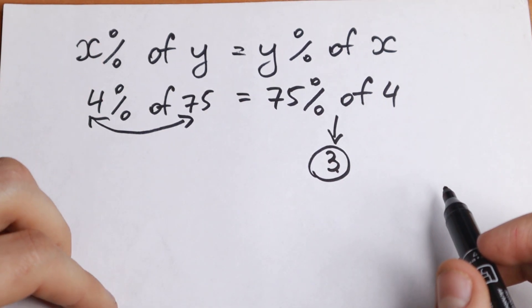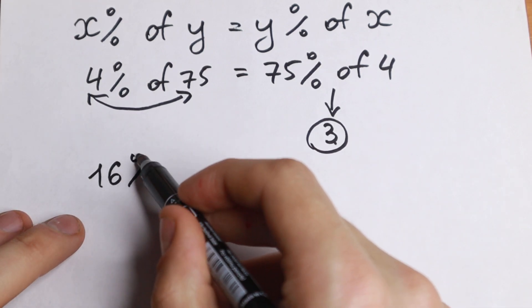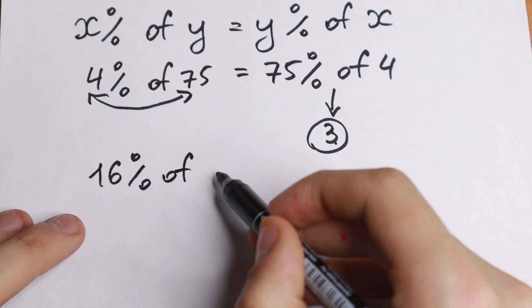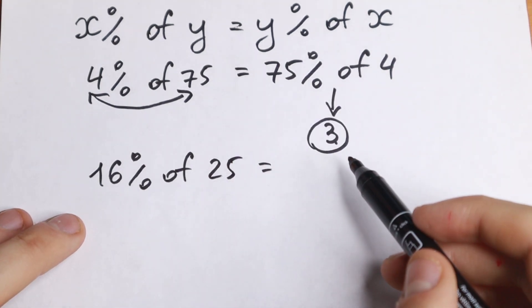So let's use this rule once more. For example, you need to find 16 percent of 25. Let's use this rule. Let's swap these two numbers. What we will have?